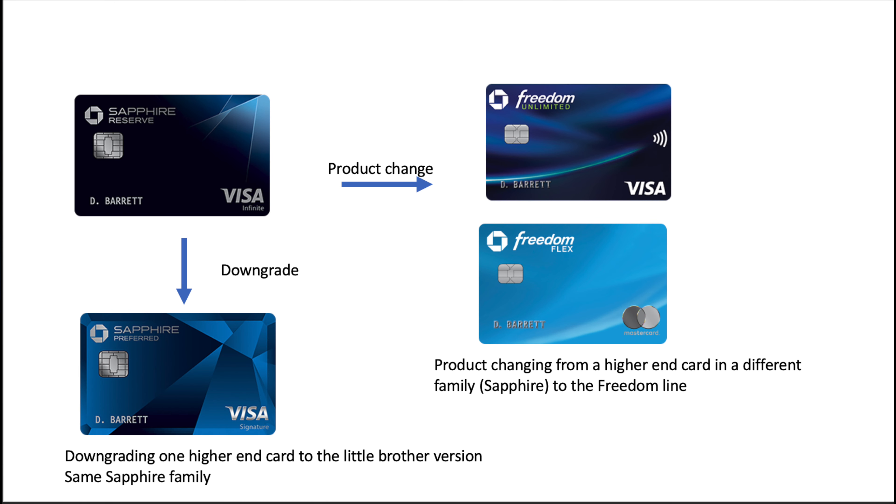This is exactly what it sounds like. You have one card with an annual fee and you want to either change it into another card that the credit card company offers, or downgrade it into the little brother version of that card. For example, if you have the Chase Sapphire Reserve and don't want to pay that $550 annual fee anymore and you do not want to cancel the card, you could downgrade the Sapphire Reserve into the Sapphire Preferred — going from a $550 annual fee down to a $95 annual fee.